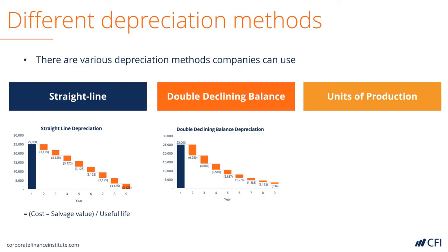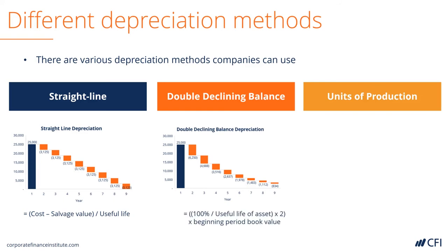With the double declining balance, it's a form of accelerated depreciation, meaning that the depreciation expense is greater in the first few years and smaller in the later years. The formula is equal to taking one, dividing it by the number of years of the asset's life, and then multiplying that by two to accelerate it. That number is then multiplied by the beginning period book value of the asset. This depreciation method requires building an actual schedule and is a much more detailed form of calculating depreciation.